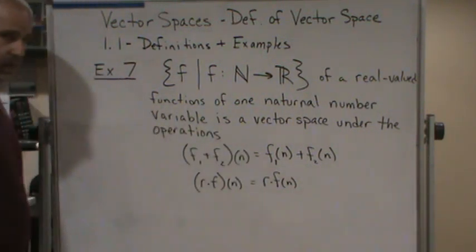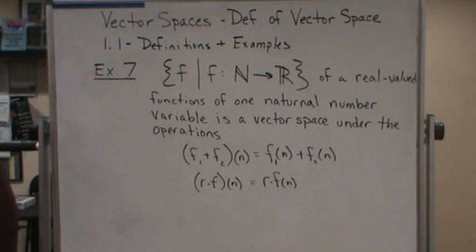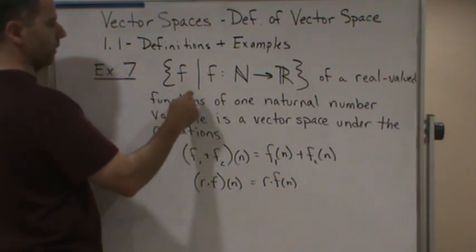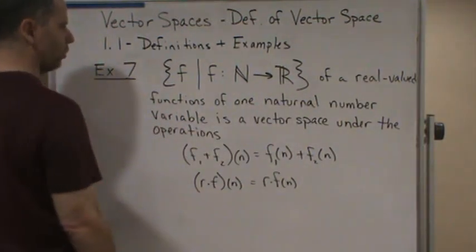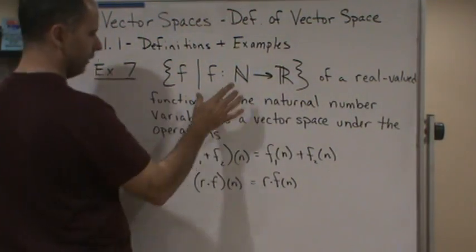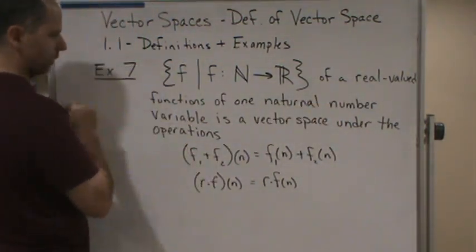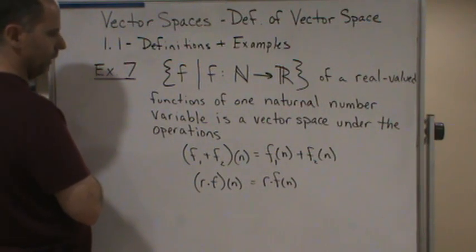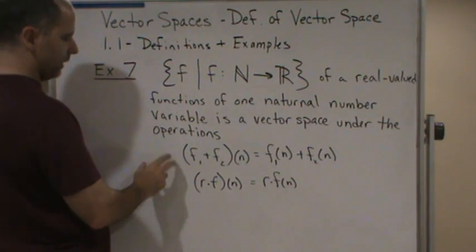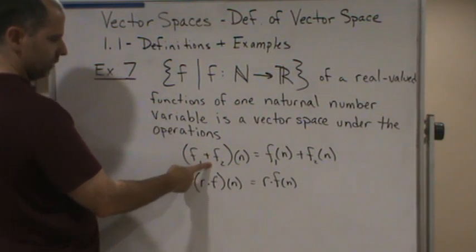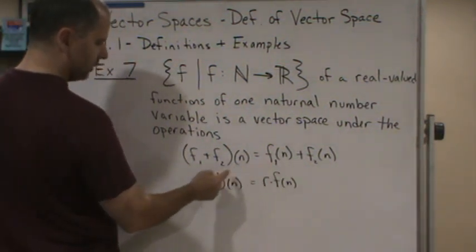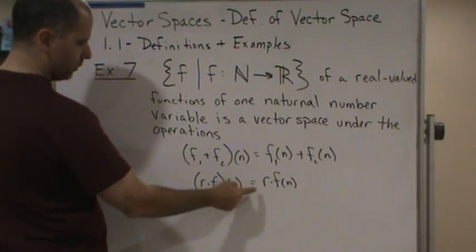Okay, now here's another example. In this example, it's the set of all functions that go from the naturals to the reals. So it's all real-valued functions of one natural number variable, which is a vector space under the operations of adding functions—the way you add functions and the way you multiply functions by a scalar.